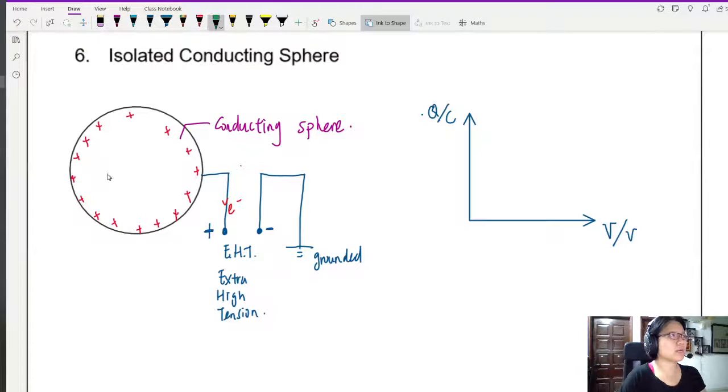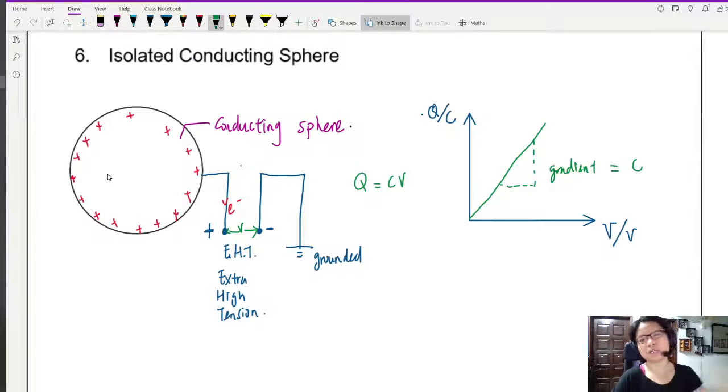From the definition of capacitance Q is equal to CV. So the V here will be the potential difference at the extra high tension, the few kilovolts. You will expect just based on this that the graph will be a straight line passing through the origin where the gradient is the capacitance. Sometimes if they want to annoy you and flip the axis, I hope you know what to do.